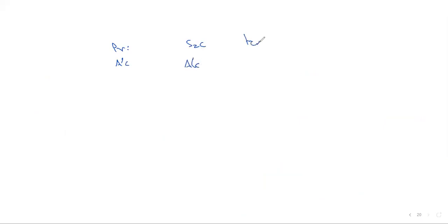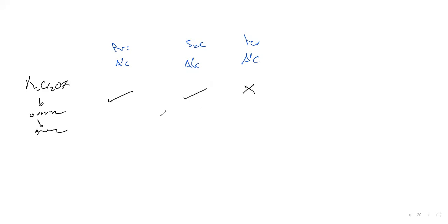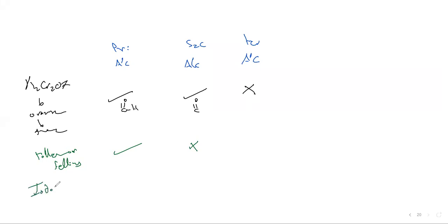To differentiate between primary, secondary, and tertiary alcohols: first use potassium dichromate — the color changes from orange to green for primary and secondary alcohols, but there is no reaction for tertiary alcohol. Primary alcohol gives aldehyde and secondary gives ketone. Then add Tollens or Fehling reagent — positive for aldehyde (primary) and no reaction for ketone (secondary). Iodoform will be positive for ketone (secondary) and negative for aldehyde (primary).